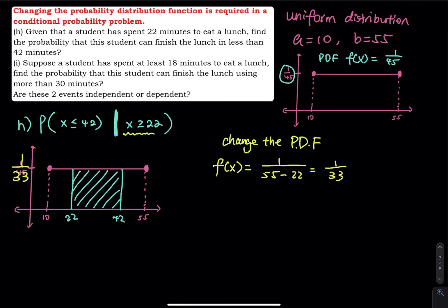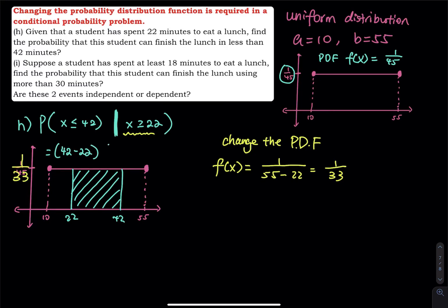So how do we answer this question? We use max minus min divided by the new height. That equals 20 divided by 33. You type 20 ÷ 33 in your calculator, which is approximately equal to 0.6061. That's how you answer this question.